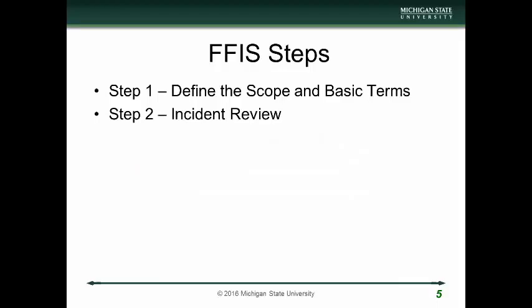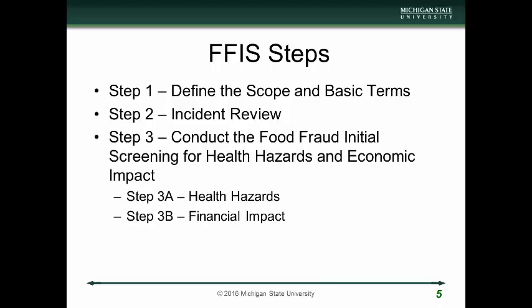The steps for food safety initial screening are: first, define the scope in basic terms. Second, conduct an incident review to start gathering information so you know what type of assessment you'll be conducting. Third, conduct a food fraud initial screening for health hazards (Step 3A) and separately for financial impact (Step 3B). The Food Safety Modernization Act specifically requires the vulnerability assessment for health hazards, but a corporation is a financial entity and must also conduct a financial impact assessment. Then, place those risks on a corporate risk rank so a resource allocation decision maker — such as a chief financial officer or chief risk officer — can determine whether a vulnerability is acceptable or not.